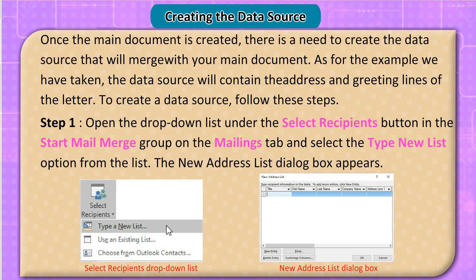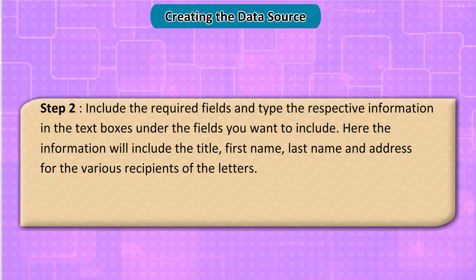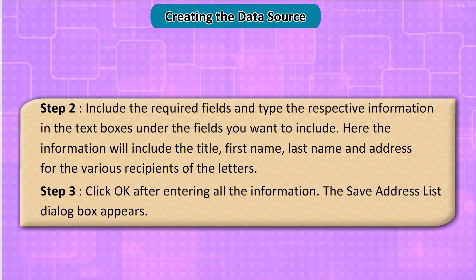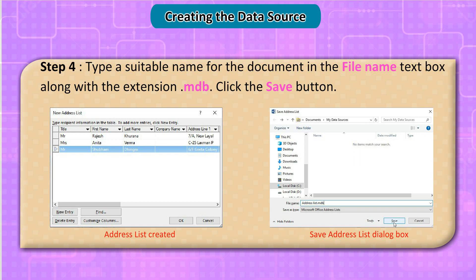The New Address List dialog box appears. Step 2: include the required fields and type the respective information in the text boxes under the fields you want to include. Here, the information will include the title, first name, last name, and address for the various recipients of the letters. Step 3: click OK after entering all the information. The Save Address List dialog box appears. Step 4: type a suitable name for the document in the File Name text box along with the extension .mdb, then click the Save button.